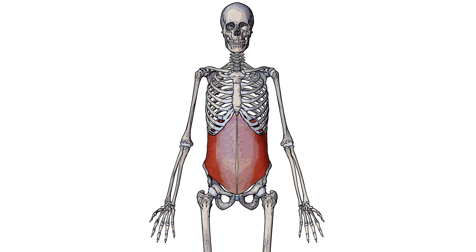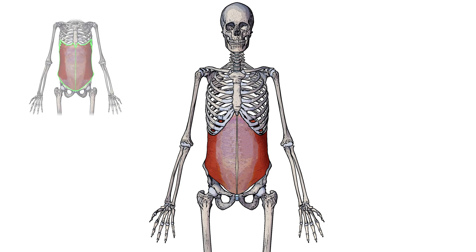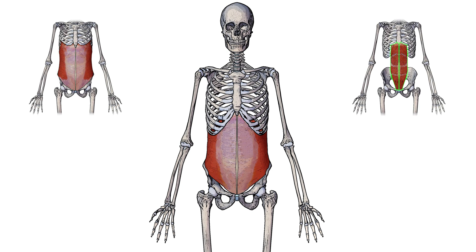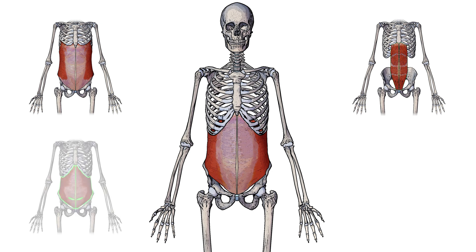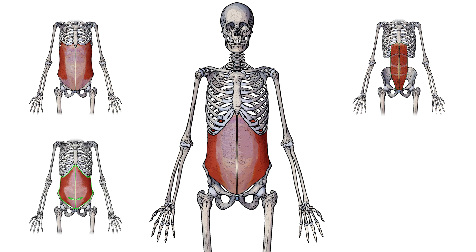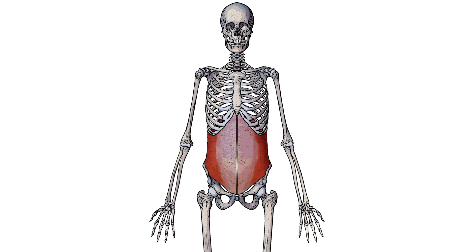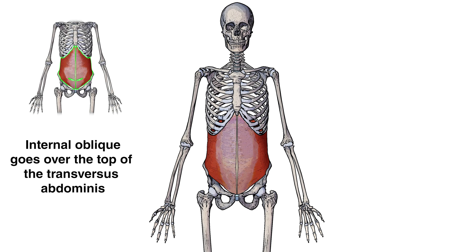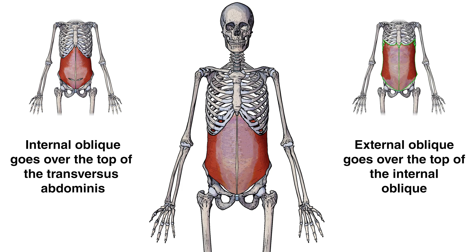The internal oblique is one of the five abdominal muscles. The other four are the external oblique, the rectus abdominis, the transversus abdominis, and the pyramidalis. I'll put links to their respective videos in the description box below. In terms of the internal oblique's relation to those muscles, the internal oblique is located superficially to the transversus abdominis and deep to the external oblique — so essentially it's located between those two muscles.